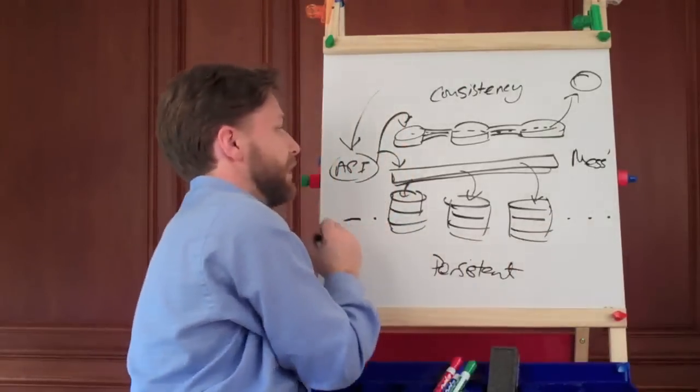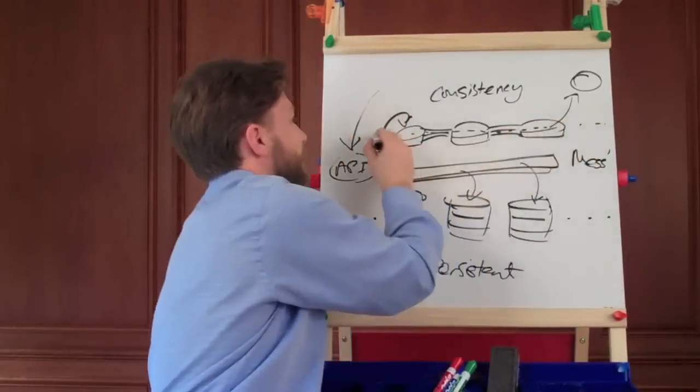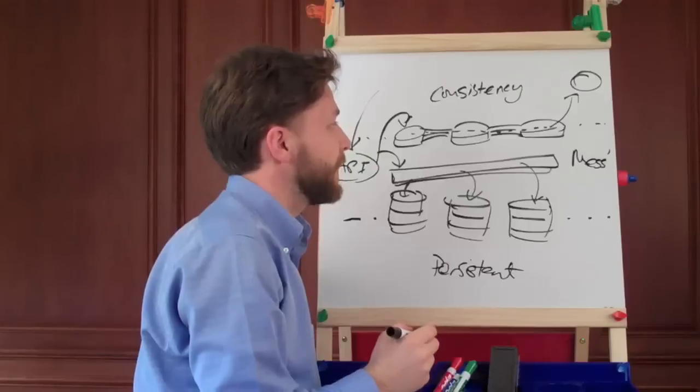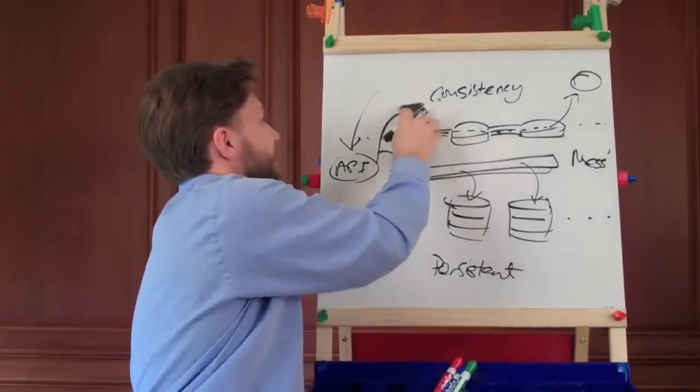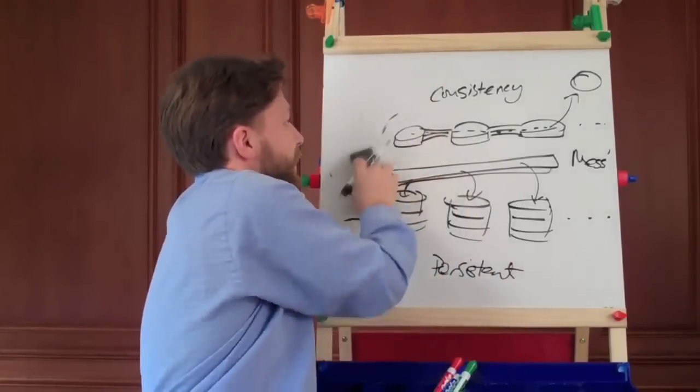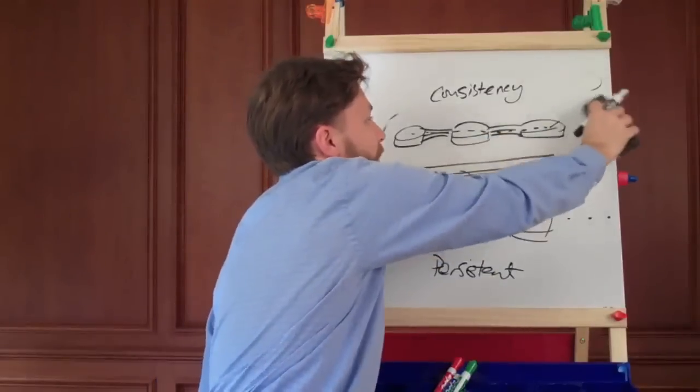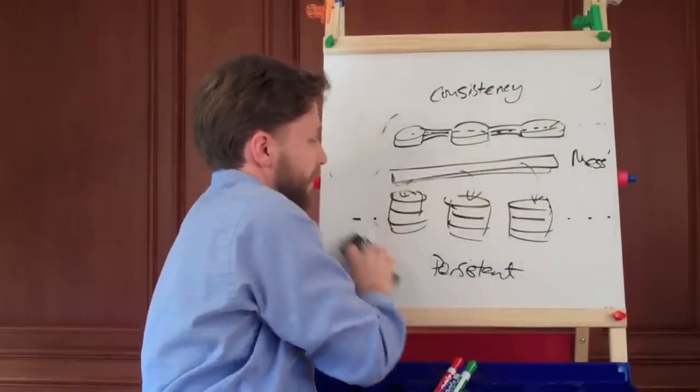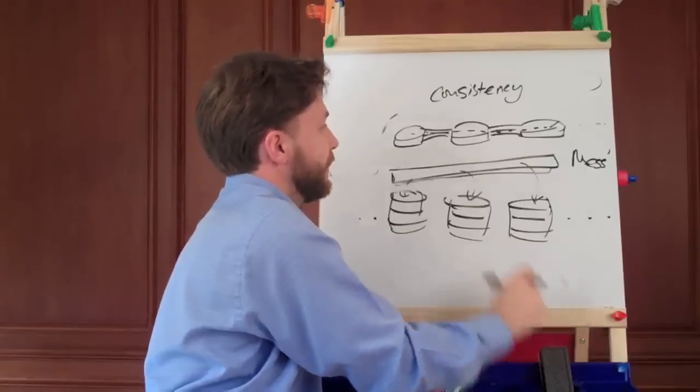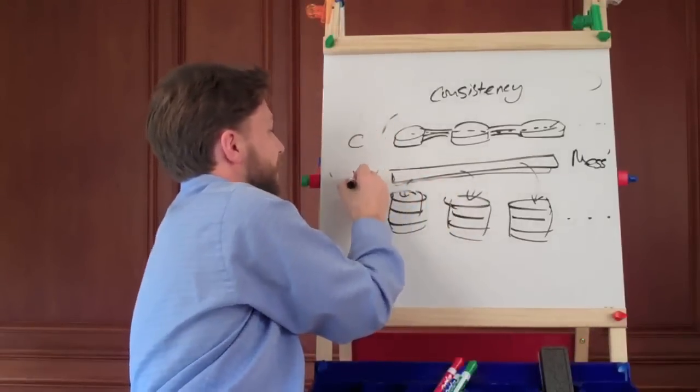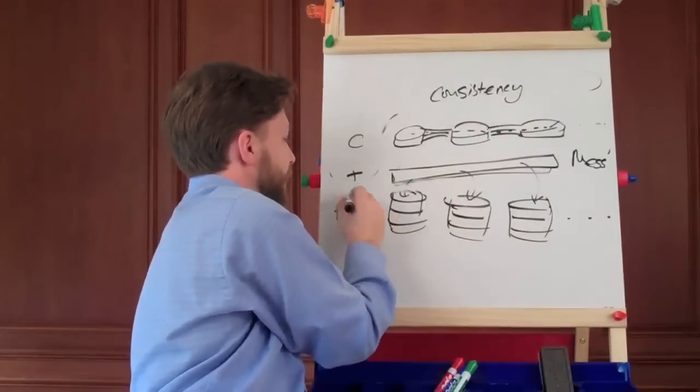And of course this can be replicated out as far as you like. So it's only a three-node system. And what that basically gives us is consistency and full replication in parallel. So that's C plus AP.